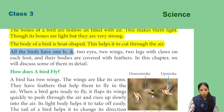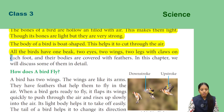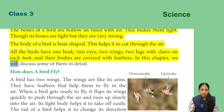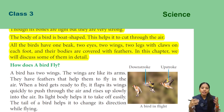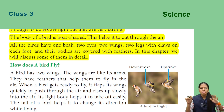All birds have one beak, two eyes, two wings, two legs with claws on each foot, and their bodies are covered with feathers. In this chapter we will discuss some of these features in detail. Every bird has a beak, two eyes, two wings, two legs with claws on each foot, and they are covered with feathers over their entire body.